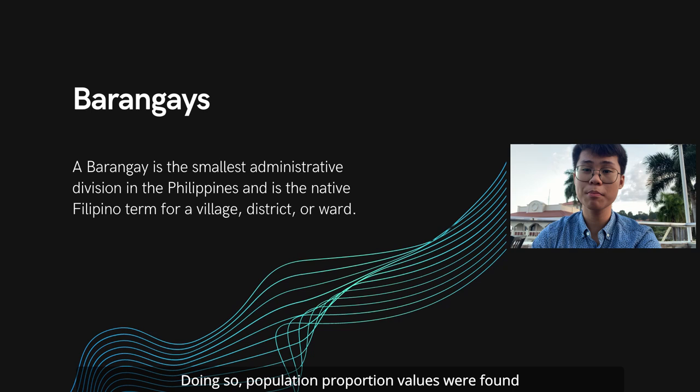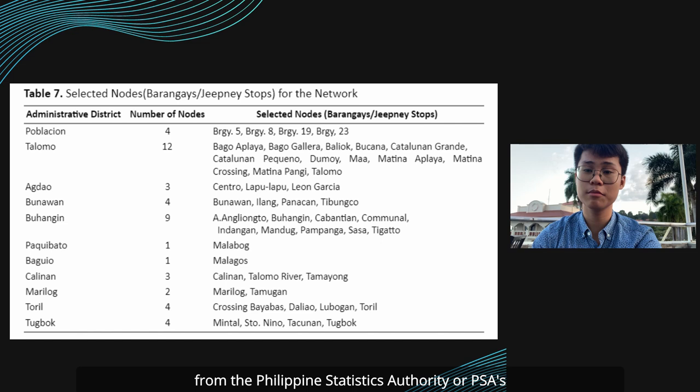Doing so, population proportion values were found and nodes were selected as shown in Table 7. The data used for node selection were gathered from the Philippine Statistics Authority's latest 2015 population census report.